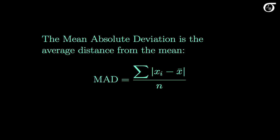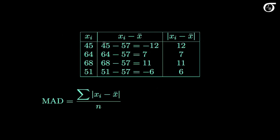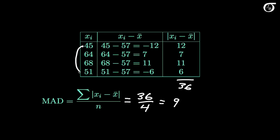Let's calculate the mean absolute deviation. Here is a table with the deviations and the absolute value of the deviations. If we add the absolute value of all the deviations, we get 36. The mean absolute deviation is 36 over 4 (the number of observations), which equals 9. On average, these four values are 9 units from the mean.